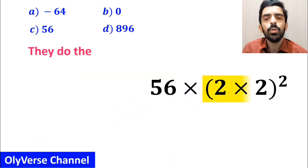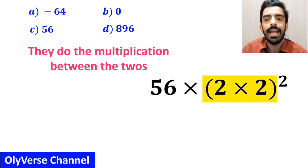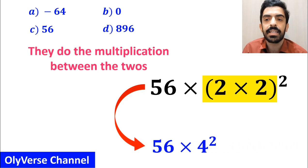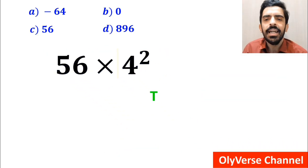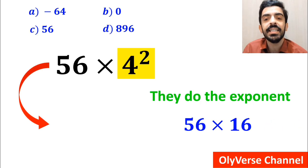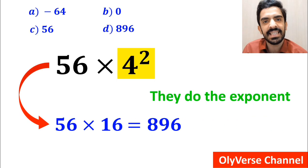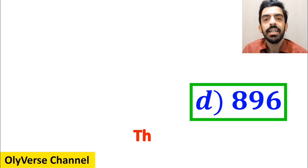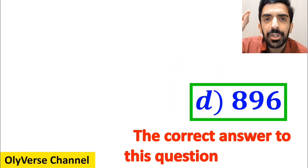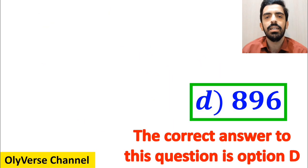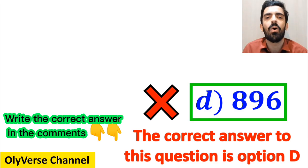Next, they do the multiplication between the 2s and rewrite this expression as 56 times 4 squared. Finally, they do the exponent and simplify to 56 times 16, which gives the answer 896. They quickly say that the correct answer is option D. However, this answer is absolutely wrong.